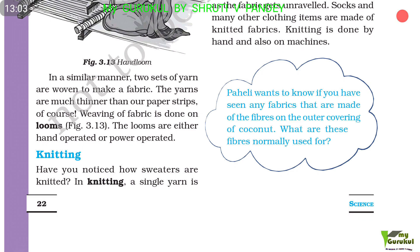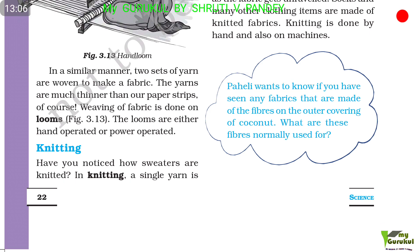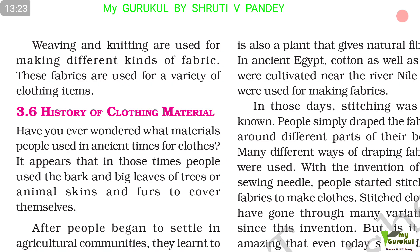Have you ever pulled the yarn from a torn pair of socks? A single yarn gets pulled out continuously as the fabric unravels. Socks and many other clothing items are made of knitted fabrics. Knitting is done by hand and also on machines. In knitting, a single yarn is used to make fabric. Weaving and knitting are used for making different kinds of fabric, which are used for a variety of clothing items.